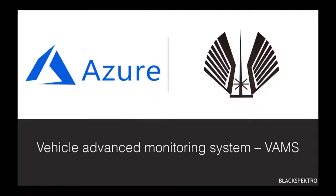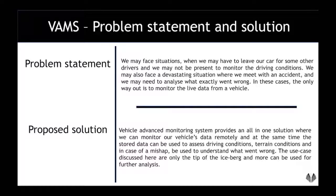Introducing VAMS — Vehicle Advanced Monitoring System — a total 360-degree solution for your vehicle. We are monitoring your vehicle's telemetry data. The goal is to monitor each and every parameter for your vehicle so that it can be used at a later stage or monitored by the owner of the vehicle remotely, with live telemetry data visible on a mobile or web app.